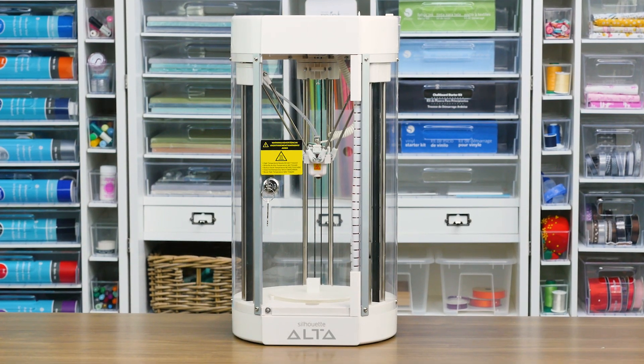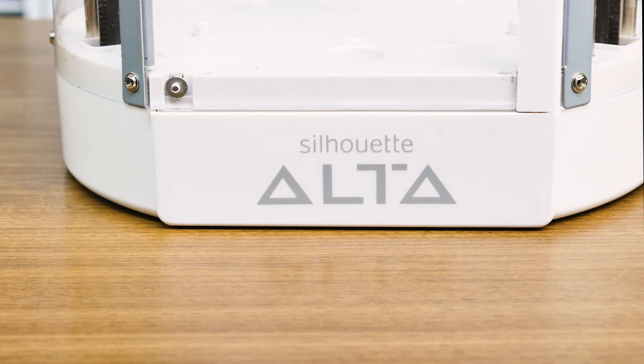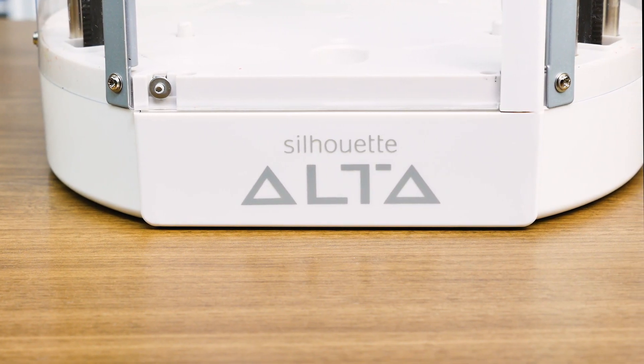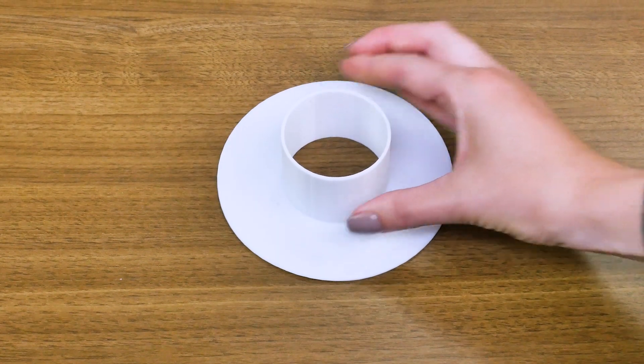Your machine comes pre-assembled and pre-calibrated, and Silhouette has already tested the Alta printer to make sure it works. In fact, the filament spool that comes in the box was printed with your very own machine.